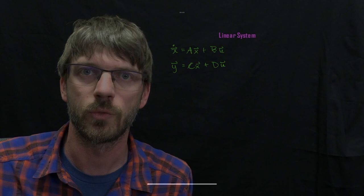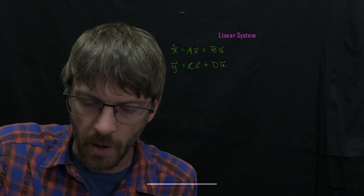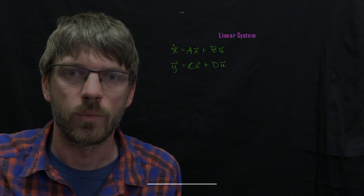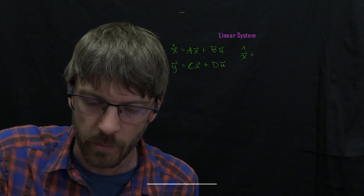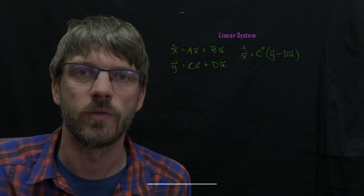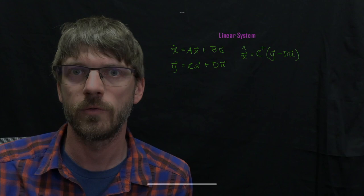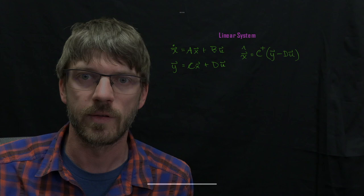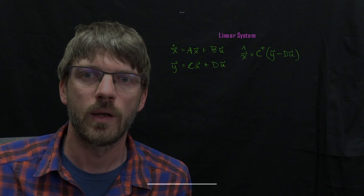Now we might get very lucky and maybe it's possible to directly determine or estimate the states given measurements at one moment in time. If that's the case, we can just take that measurement equation y and rewrite it as an equation for x. So x hat is going to be equal to, we'll move the Du over so we have y minus Du, and then we just need to multiply this by the pseudo-inverse of C. If that pseudo-inverse exists, which is only true if C is full rank, then it's in principle possible to get an estimate of the state just given those measurements. Now what happens when that's not possible?